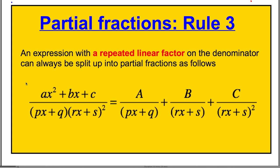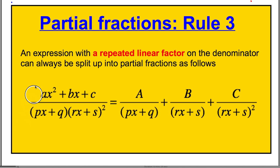This only works when the order of the top is smaller than the order of the bottom. We have a quadratic on top and on the bottom we have three lots of x-brackets multiplied together, so we've got a cubic. It works in this case.